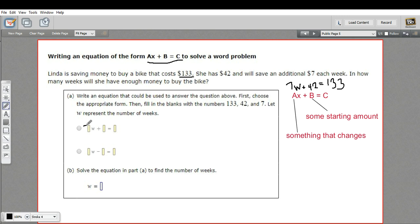And we can fill in the letters here. It's 7w plus 42 equals the total cost of the bike, $133. And then we need to solve it.